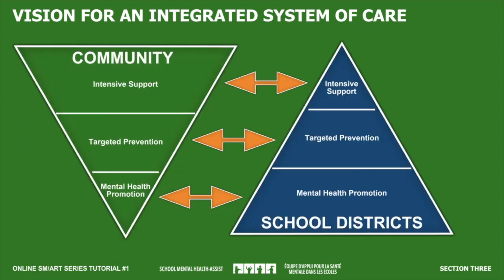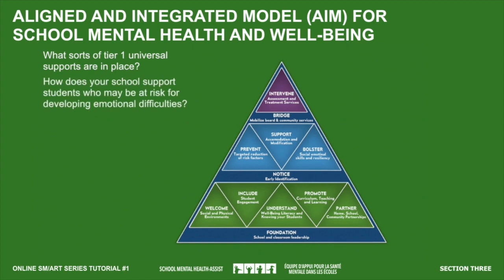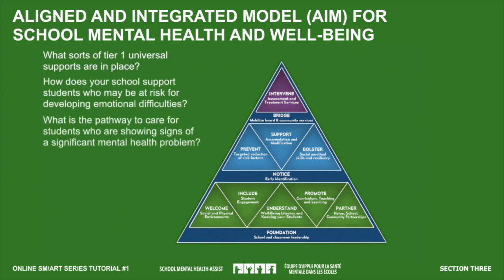Schools are in an optimal position to provide support through universal mental health promotion and prevention programming, but we can't do it alone. To provide a full system of care at universal, targeted, and intensive levels, we need to work seamlessly with community partners who have particular expertise in working with students requiring clinical intervention. Take a minute and think about what a tiered approach looks like in your school — what sorts of Tier 1 universal supports are in place, and what is the pathway to care for students showing signs of significant mental health problems?